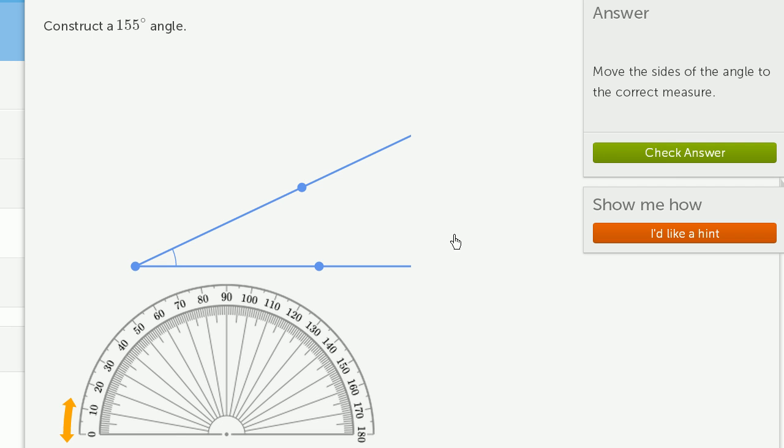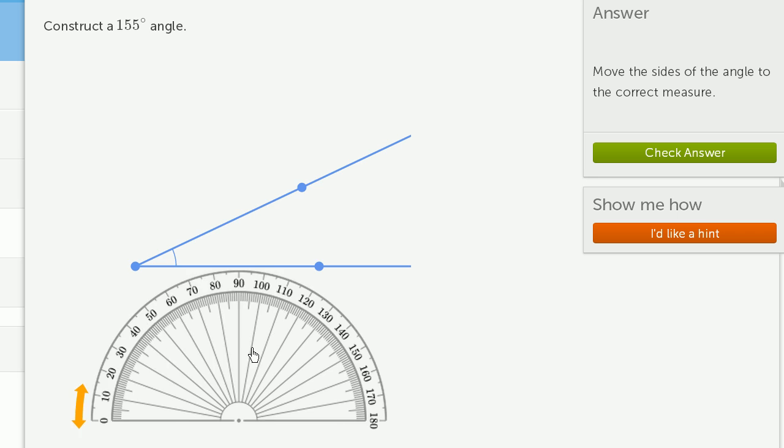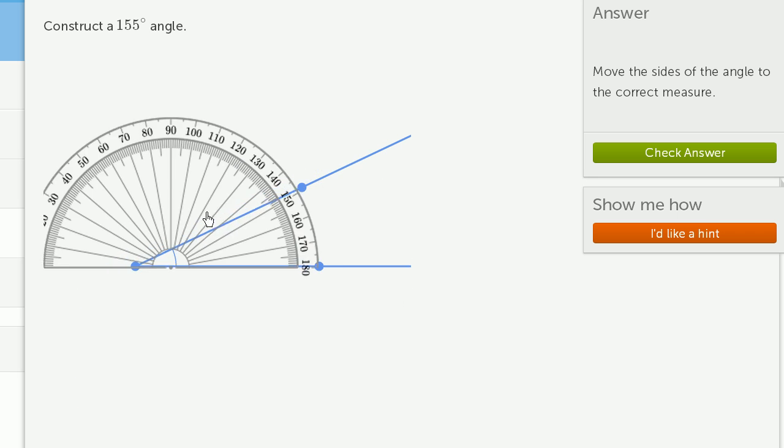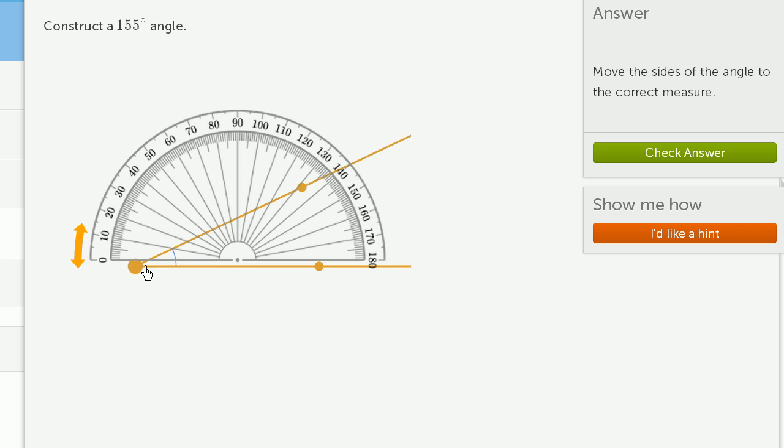Let's do one more of these. A 155-degree angle, and this one's interesting because this is an obtuse angle. So once again, let us put the protractor at the vertex of the angle. So just like that.